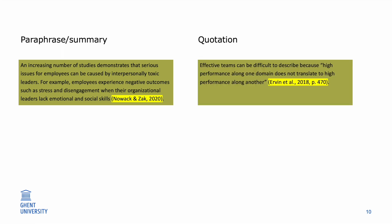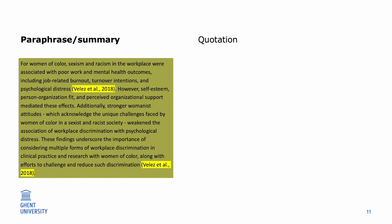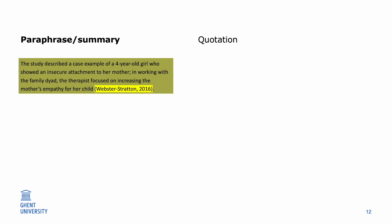Whenever you paraphrase, summarize, or quote a work, you need to mention it as an in-text reference. When you summarize or paraphrase an idea from a source within a paragraph, you should cite this work in the first sentence in which it is discussed, and only repeat the in-text reference in the following sentences when the subject changes. The in-text reference is placed immediately after the information being paraphrased or summarized.